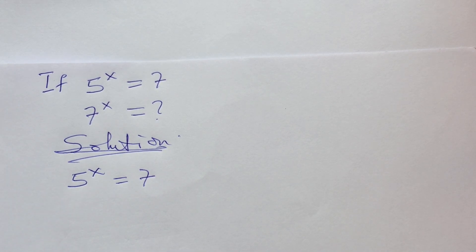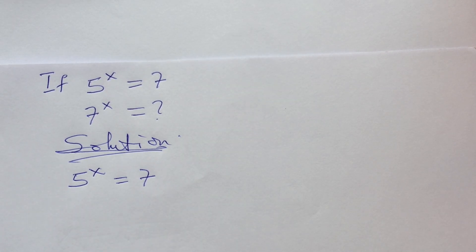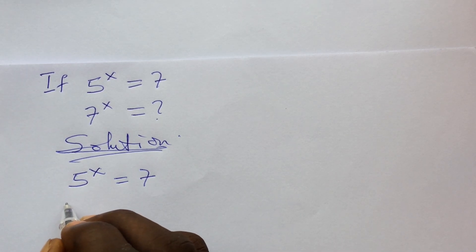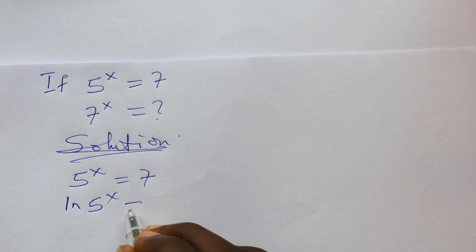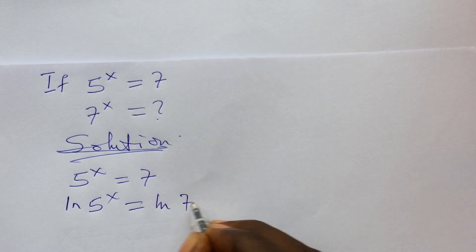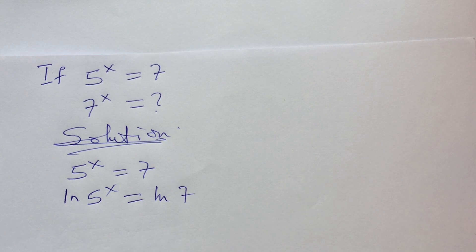Although some mathematicians have argued that taking the natural log at the first stage is not appropriate, here we cannot do otherwise because the two base numbers are prime numbers and so they cannot be factorized further. So we're taking the natural log straightforwardly. With ln on both sides we have: ln of 5 to the power of x equals ln of 7.